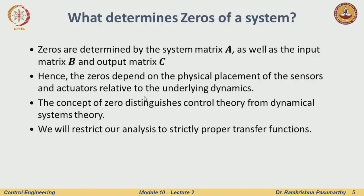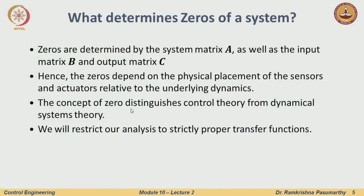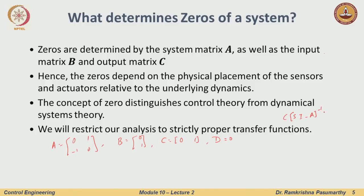This is what distinguishes a control system from a standard dynamical system. The concept of zero is what distinguishes control theory from dynamical systems theory. Most of the analysis we will do is for strictly proper transfer functions. Let us see this with a simple example: A = [0, 1; −1, 0], B = [0; 1], C = [0, 1], D = 0.